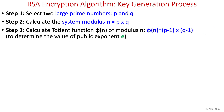In step three, we calculate the totient function phi(n) of modulus n, which is simply the product of (p − 1) and (q − 1). You can learn more about the totient function in a separate video. This value is required to determine the value of the public exponent e in the next step.